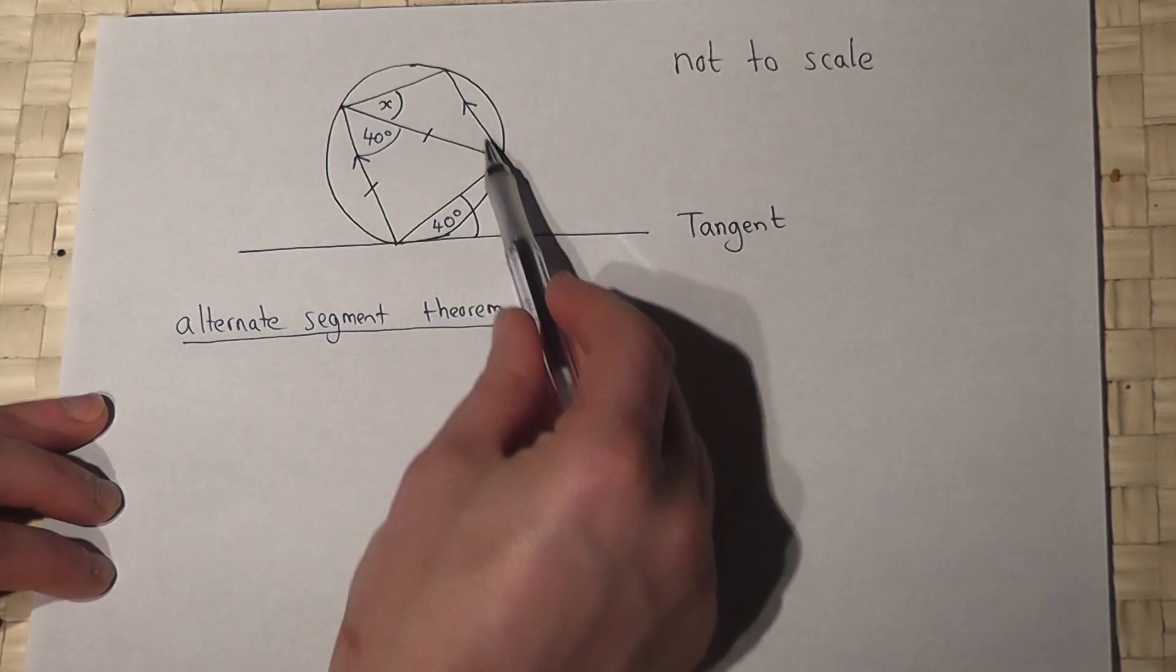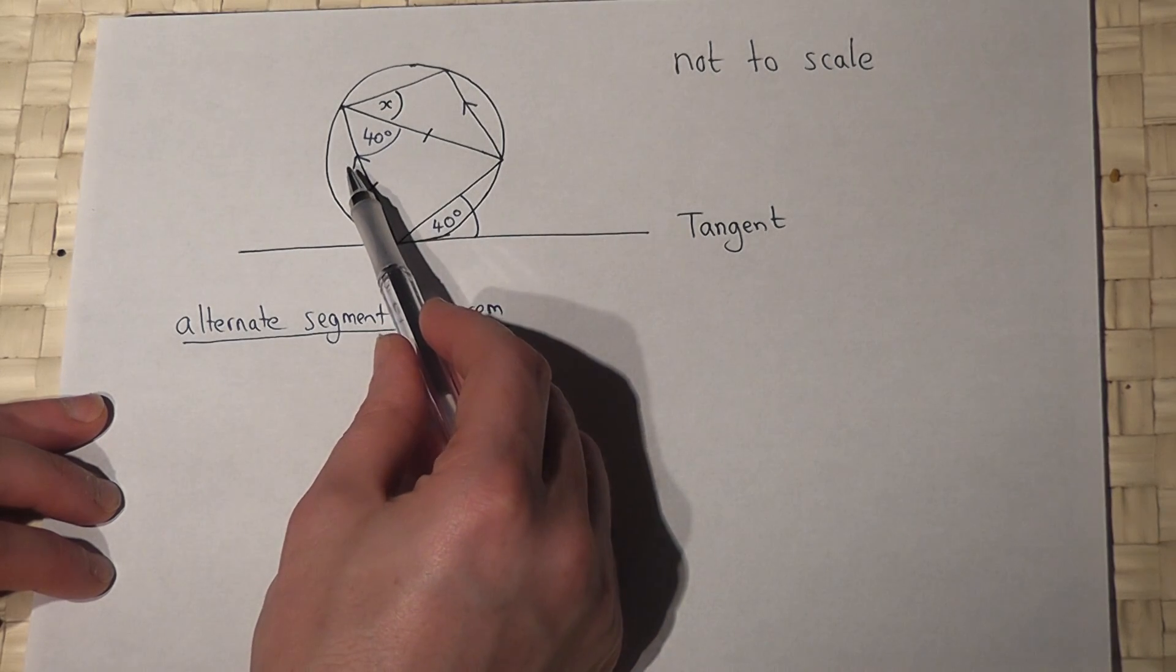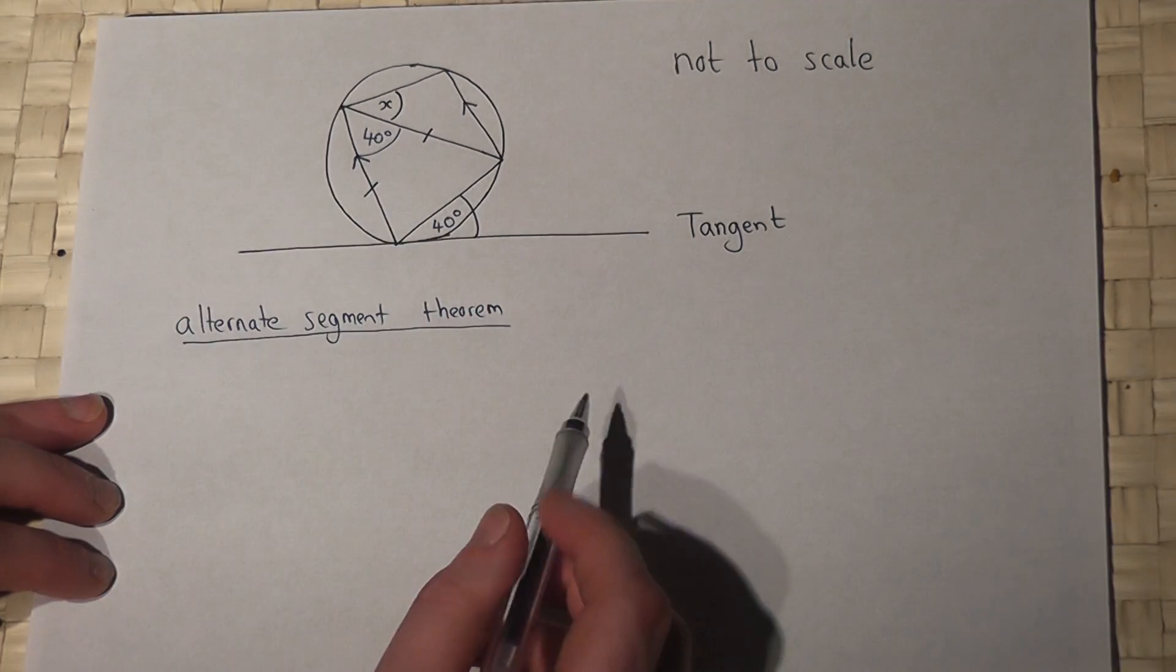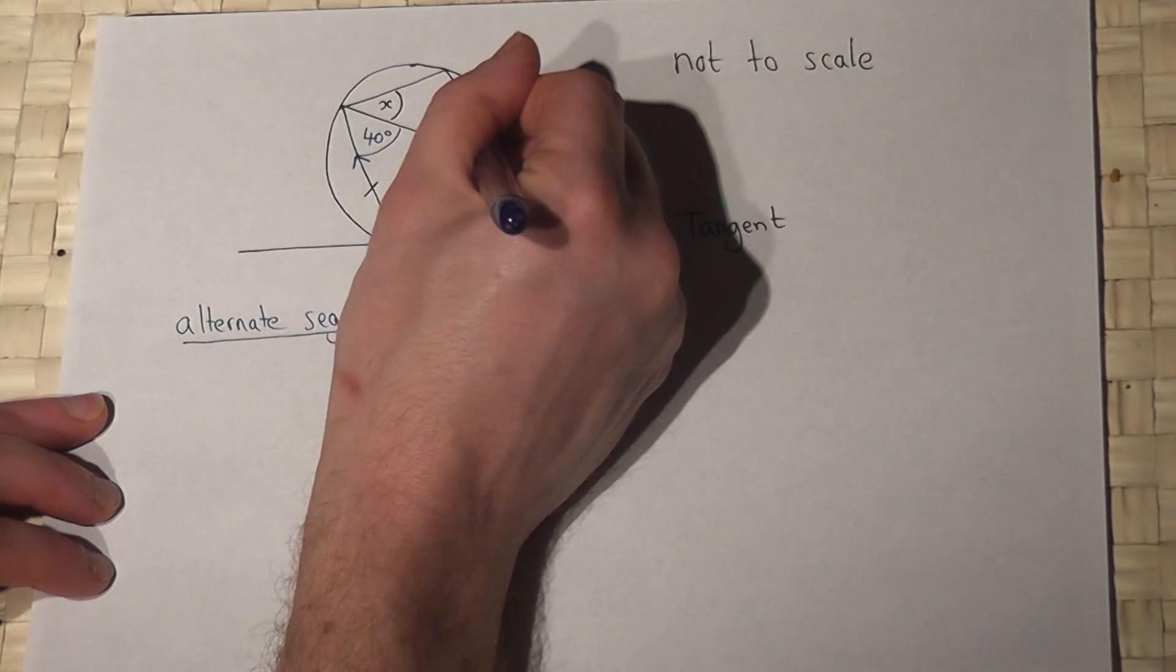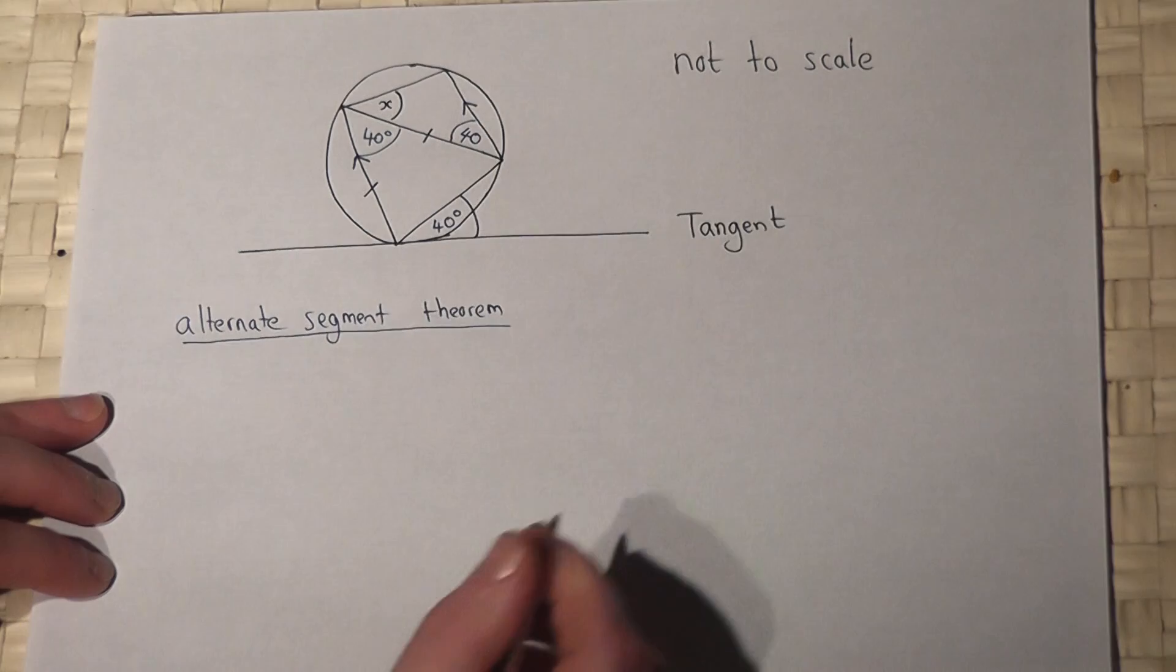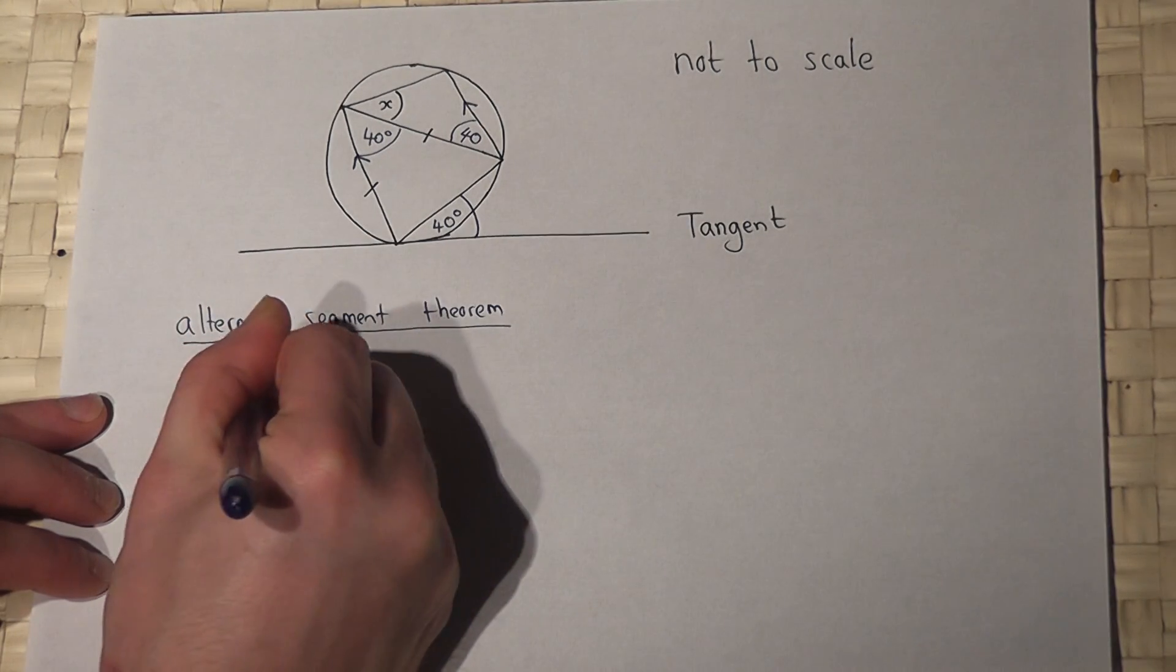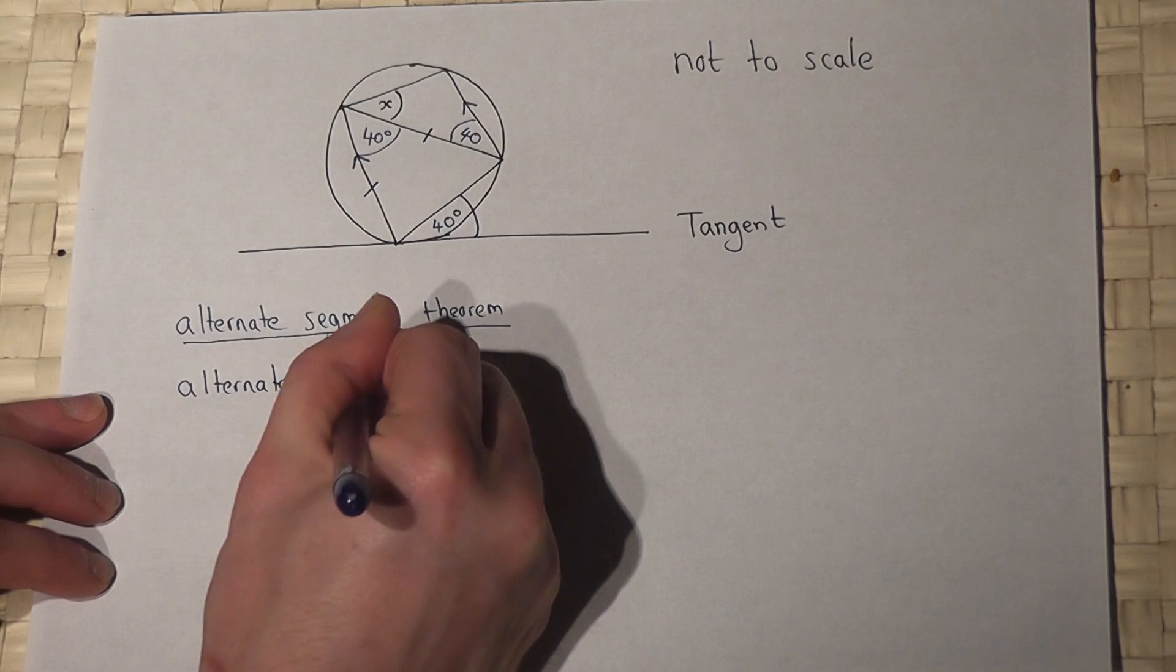These two lines are parallel because we've got arrows on the lines. So I know this angle here must also be 40, and that's using the alternate angle on parallel lines.